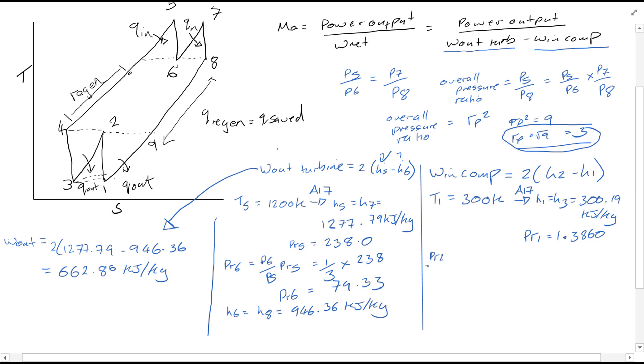PR2 over PR1 is equal to P2 over P1. So then PR2 is equal to 3 times 1.3860, using this here. Interpolating to find h2, which is also equal to h4, you'll find a value of 411.26 kilojoules per kg.